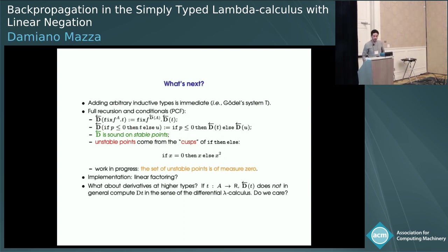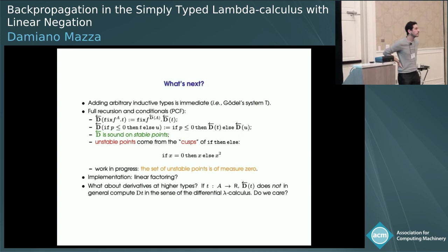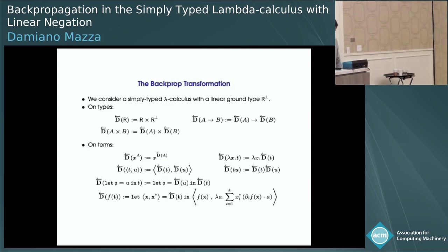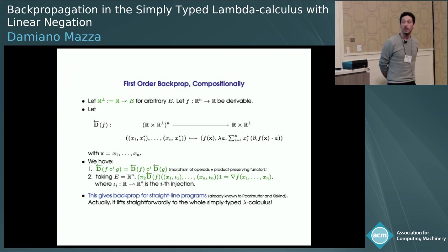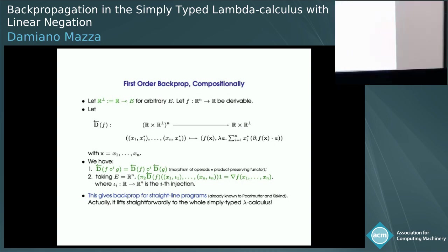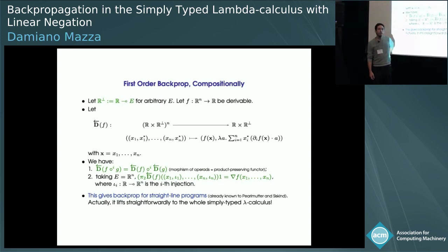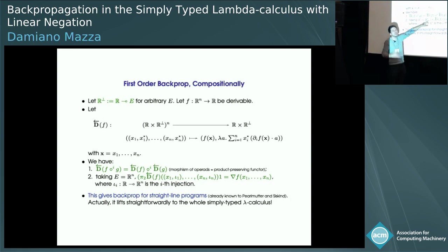Q&A: On the definition of linear negation as R ⊸ E for arbitrary E — in our context, E is always going to be R to some power. The whole thing is parametric in N, and depends on the arity of the function whose gradient you want to compute.